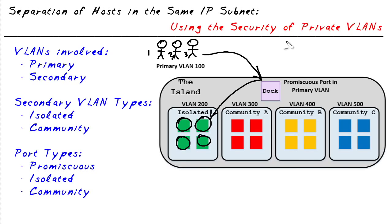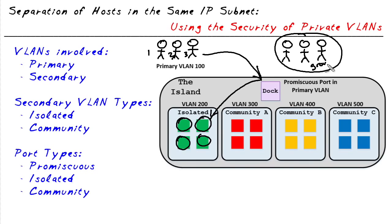Another group of people — maybe they're friends — want to go to the island but they want to be able to see and visit and hang out with each other while there. So they're kind of like a group of individuals. To accomplish that, they arrive at the dock and are placed in a community area for that group. So persons four, five, and six can all communicate with each other and see each other while on the island.